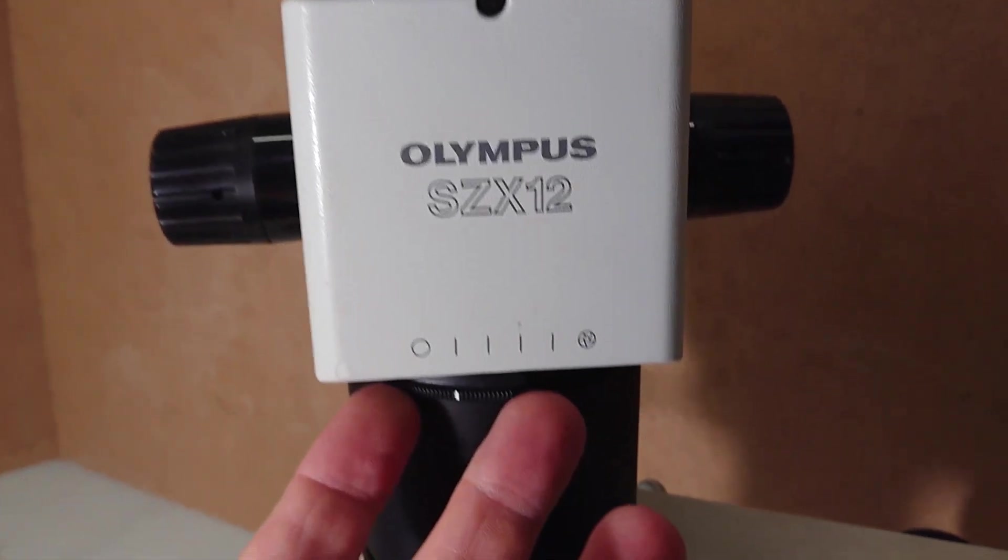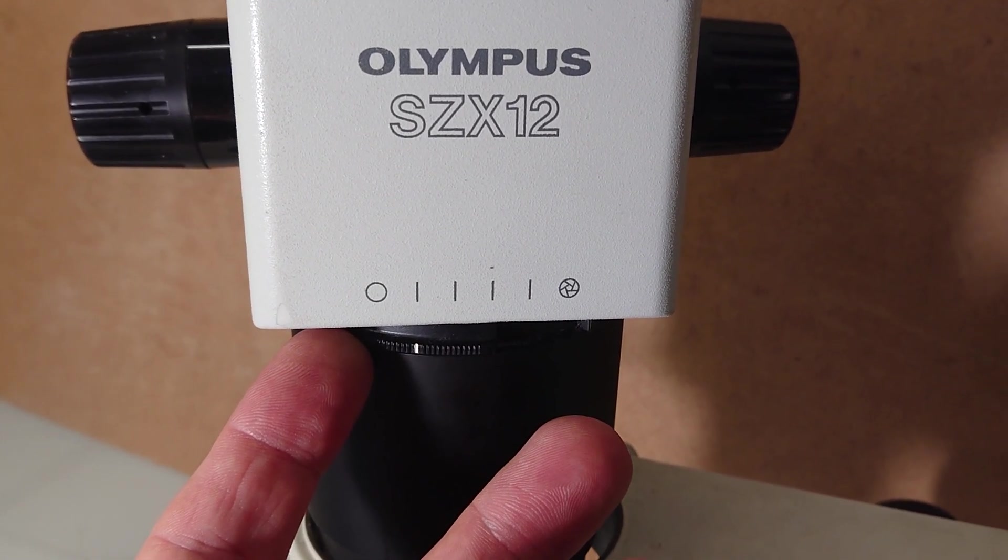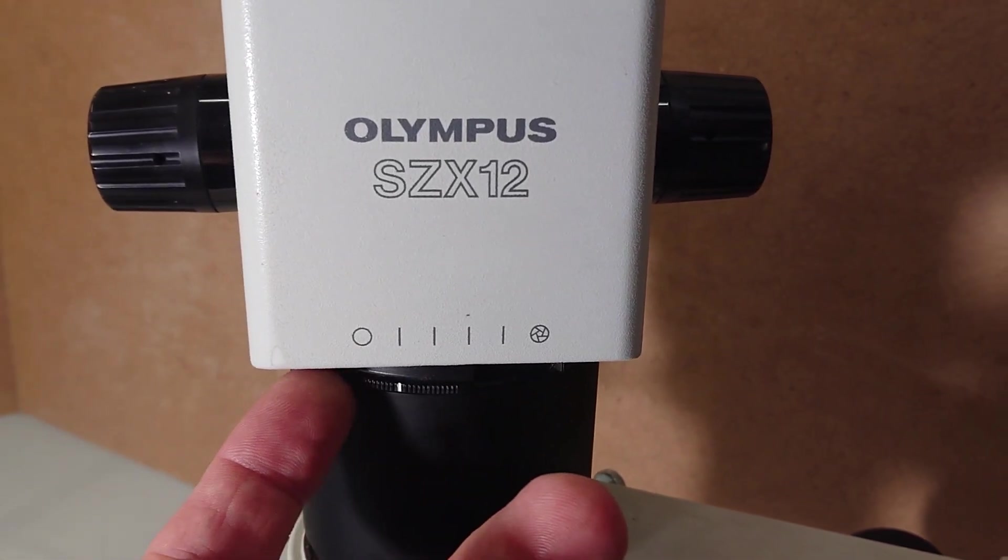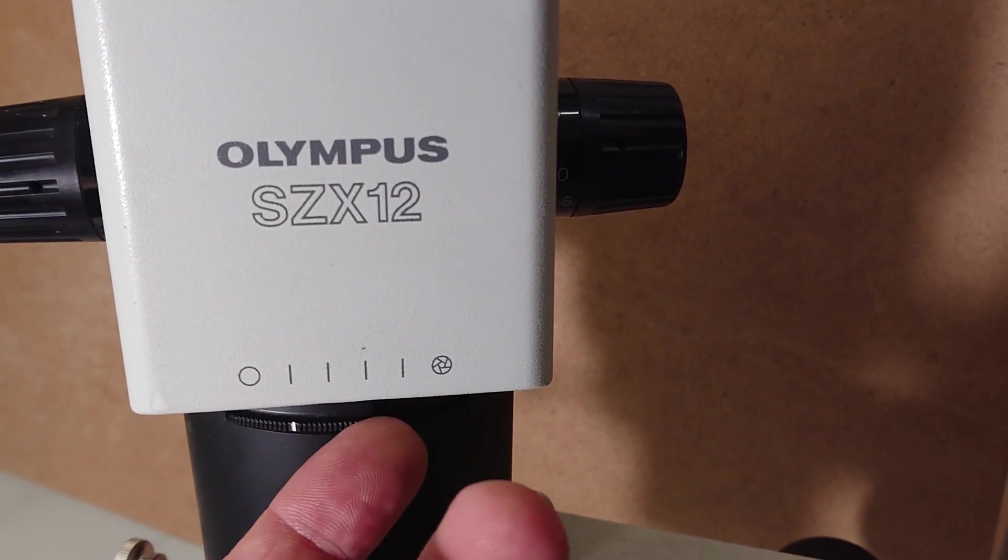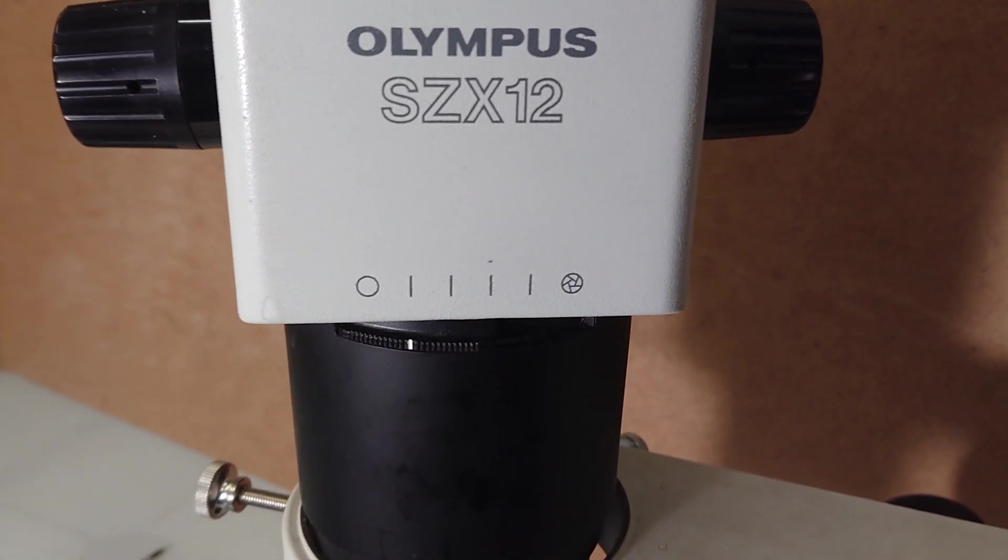As I already said, this microscope head has an iris dial that lets us when we use minimum magnification to make the field of view deeper.